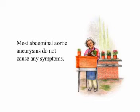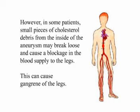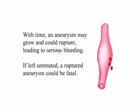Most abdominal aortic aneurysms do not cause any symptoms. However, in some patients, small pieces of cholesterol debris from inside of the aneurysm may break loose and cause a blockage in the blood supply to the legs. This can cause gangrene of the legs. With time, an aneurysm may grow and could rupture, leading to serious bleeding. If left untreated, a ruptured aneurysm could be fatal.